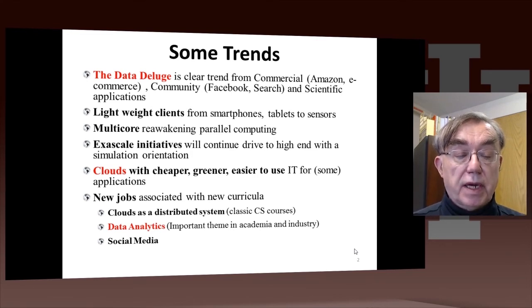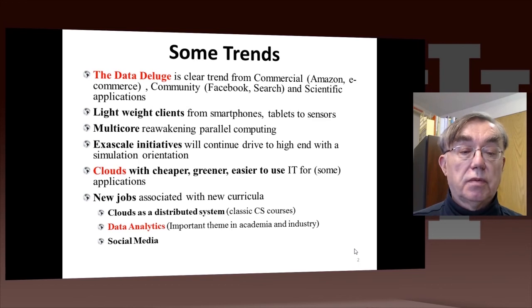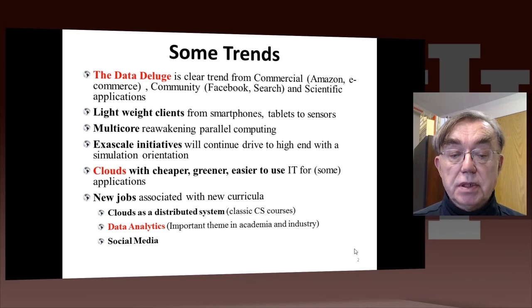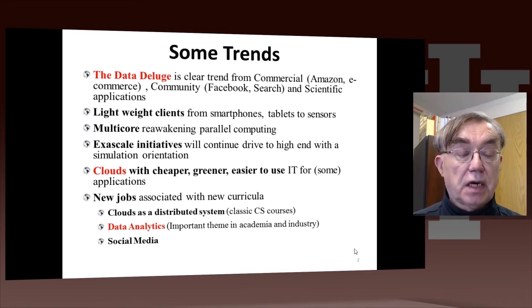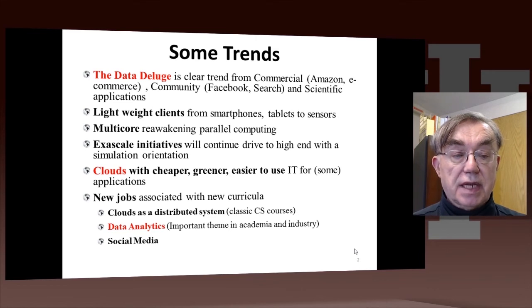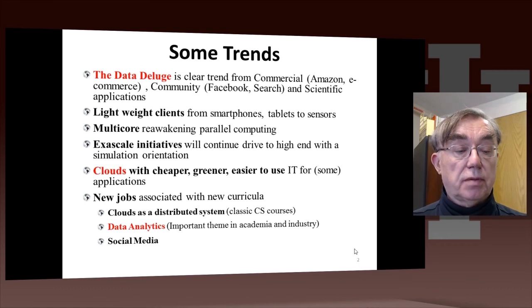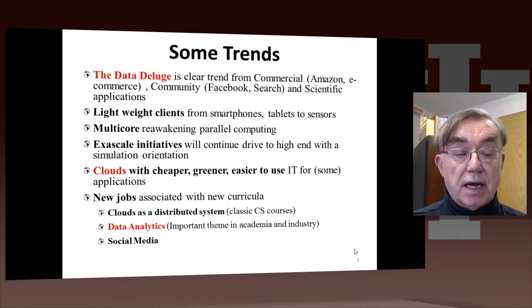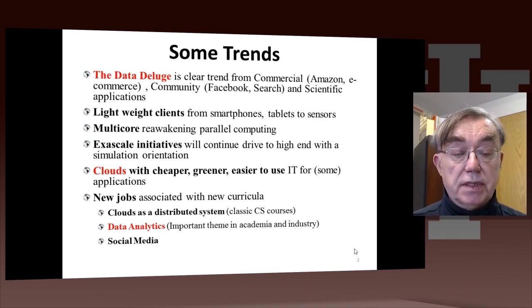We will include clouds, because clouds are the natural way to process the data deluge. We will find that clouds are suitable for data intensive applications, plus providing cheap, environmentally friendly computing. The computing is also easier to use in many ways. A final important feature of the data deluge and the modern status of technology is the new jobs, and indeed the new curricula associated with these new jobs. These span from areas like cloud computing as a class, which can be thought of as part of a classic computer science distributed systems class.